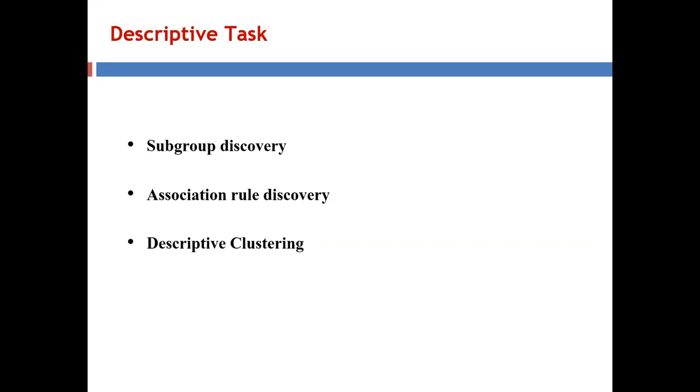The last descriptive task is descriptive clustering. The difference between predictive clustering and descriptive clustering is that in descriptive clustering, exemplars are not used — the cluster will never have a representative. Otherwise, the concept of clustering remains the same. The objective is to find patterns and hidden structure from the sample data, and the classification environment is not under control because we are not using any labeled training dataset.